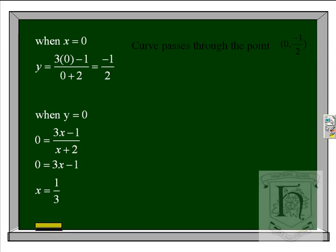Substituting y equals 0 and solving the equation, we get x equals a third. So the curve passes through the point (1/3, 0). We are now building a picture of our curve.